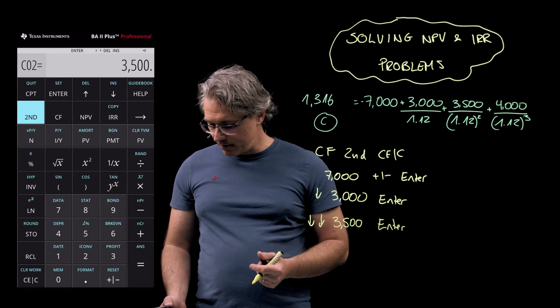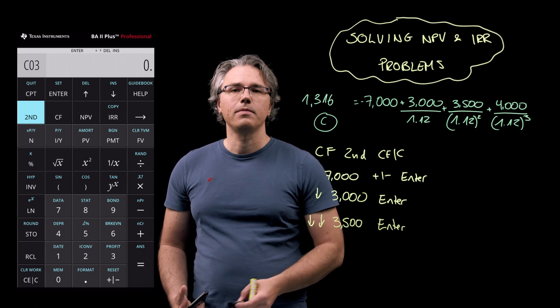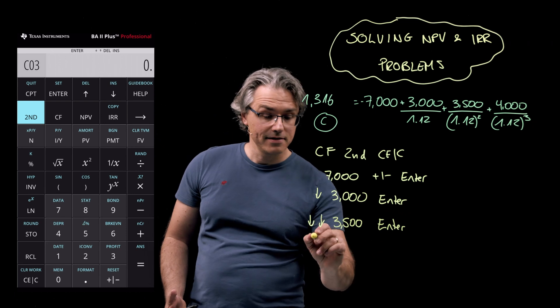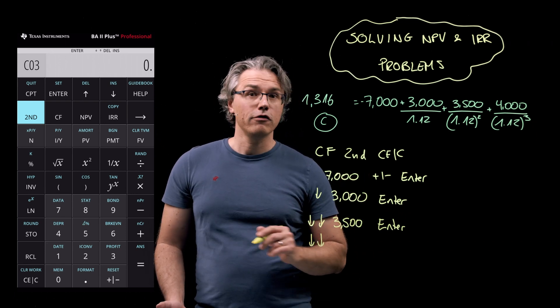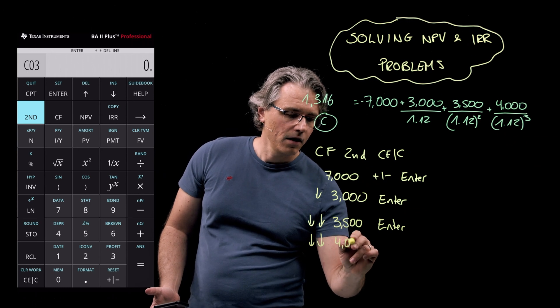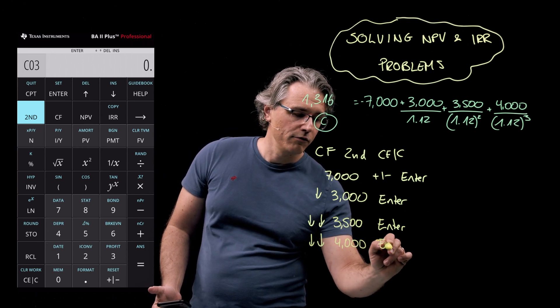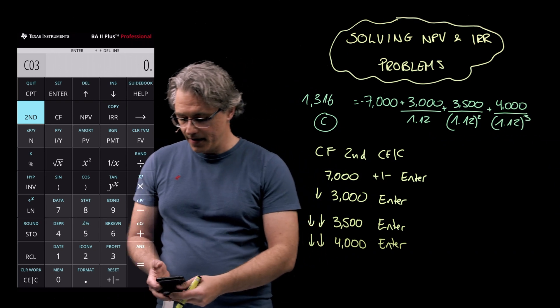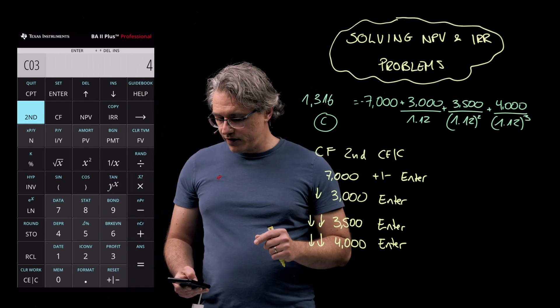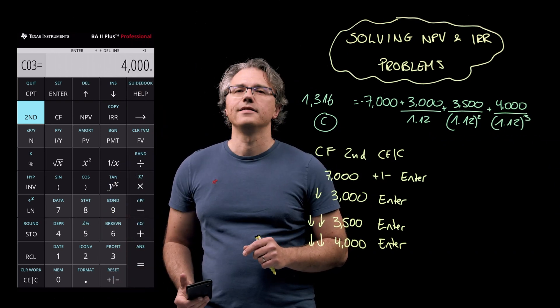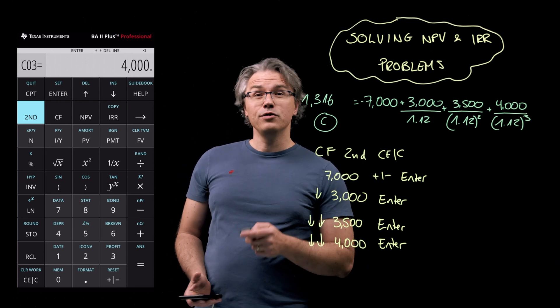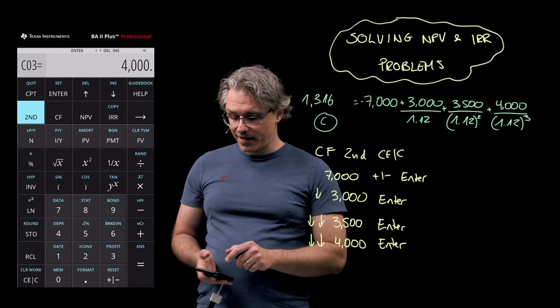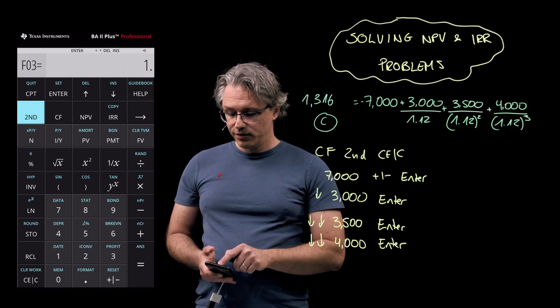Down arrow twice now. And we get to the place where we enter the C03 cash flow. And that's going to be 4000, which you'll once again need to confirm with the enter key.